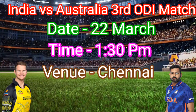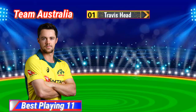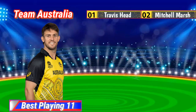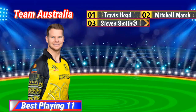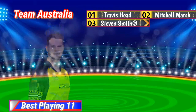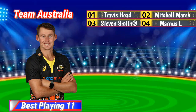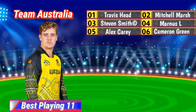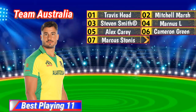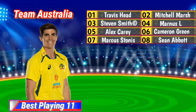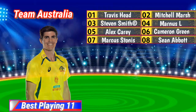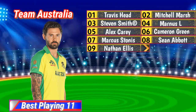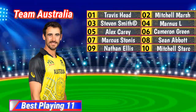Team Australia Final Playing XI: Number 1 Travis Head, Number 2 Mitchell Marsh, Number 3 Steve Smith (Captain), Number 4 Marnus Labuschagne, Number 5 Alex Carey, Number 6 Cameron Green, Number 7 Marcus Stoinis, Number 8 Cummins, Number 9 Nathan Ellis, Number 10 Mitchell Starc.